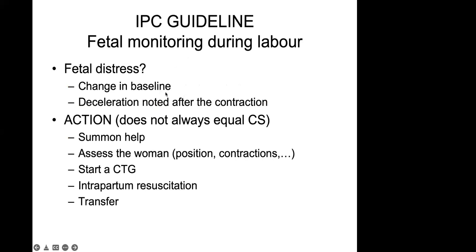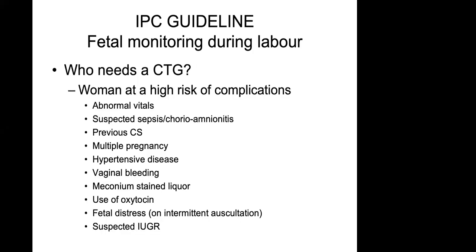What is fetal distress? It's a change in baseline — the baby does not recover to its heart rate as before, it's higher or lower, or there's still a deceleration after the contraction has passed. If we have fetal distress, we need to take action — and action is not necessarily a cesarean. It could be summoning help, assessing the woman, maybe she's now fully dilated, starting a CTG, doing intrapartum resuscitation, or transferring the woman to a facility where cesarean is available. Women who need a CTG from onset of labor are those at high risk: abnormal vitals, meconium staining, twins, IUGR, and similar conditions.